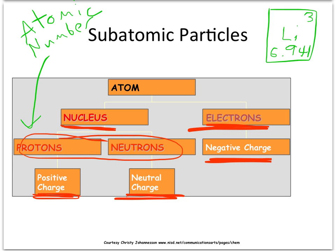For example, the atom, an atom of lithium, has three protons. So, on the periodic table, lithium is number three.